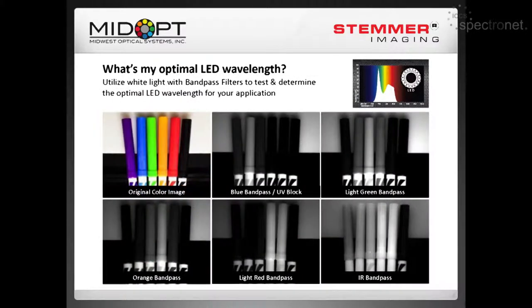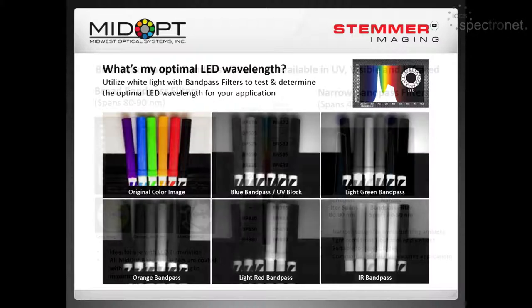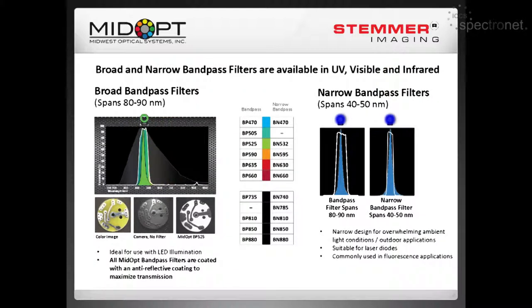Here's an example — we use blue bandpass, green bandpass, and we can figure out what the proper illumination would be for your application, even in the infrared. We manufacture bandpass filters in the UV, visible, and infrared. We also manufacture a line of narrow band filters. Our typical bandpass filters are 80 to 90 nanometers, but we also manufacture 40 to 50 nanometer versions. These are recommended for extreme ambient conditions, outdoor applications, and infrared — situations where there's too much sunlight entering a factory floor.